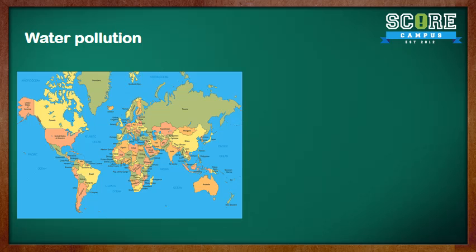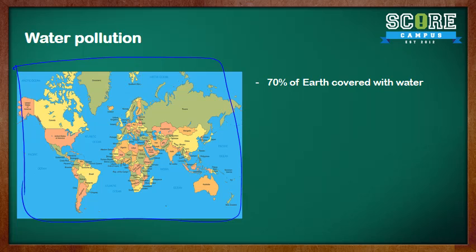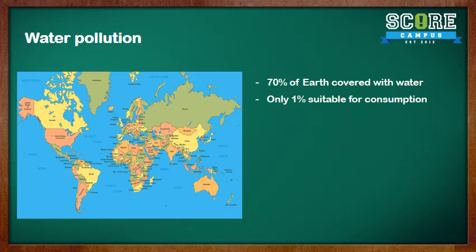Do you actually know that 70% of earth is covered with water? You see this map here? This blue part is all water. So 70% of the earth is covered with water. But only 1% of this is suitable for consumption, which is very little water.